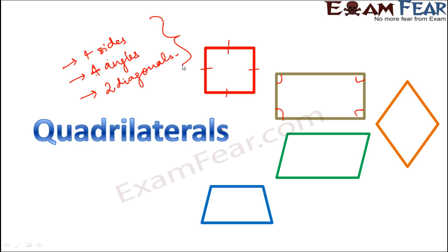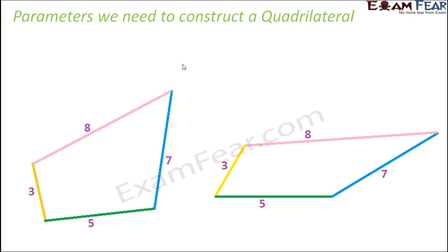Okay, with the measurement of the sides given - that means you are told that you have to draw a quadrilateral with four sides which measure 3 centimeters, 5 centimeters, 7 centimeters, and 8 centimeters respectively.